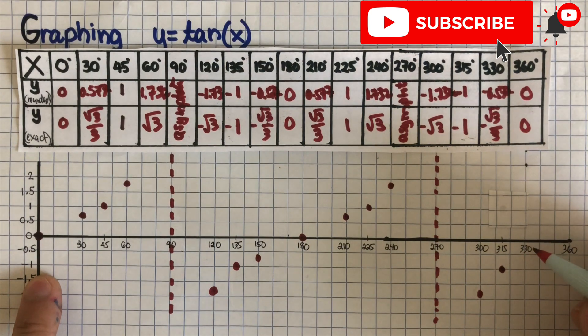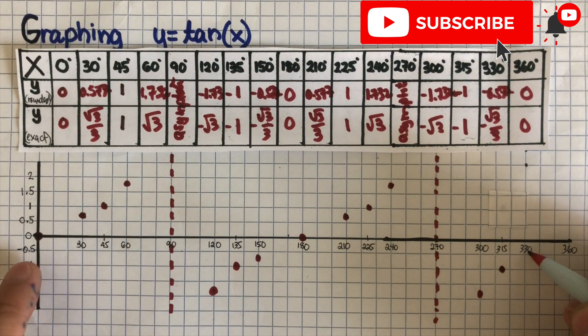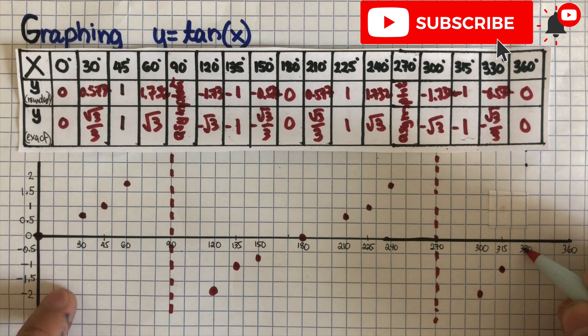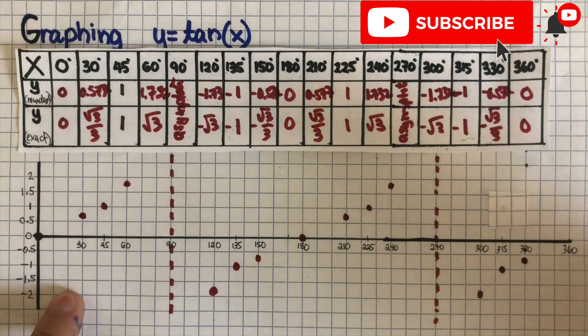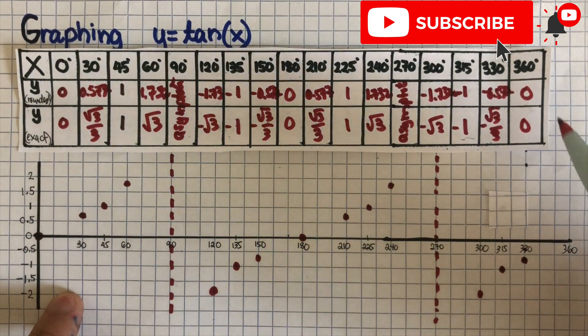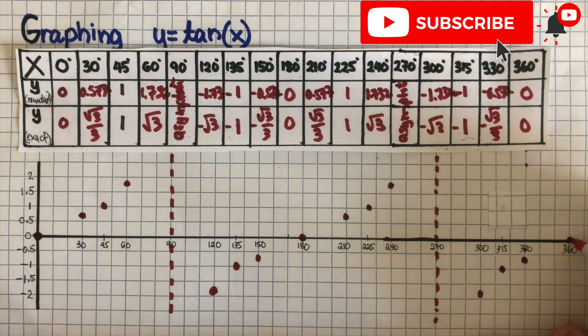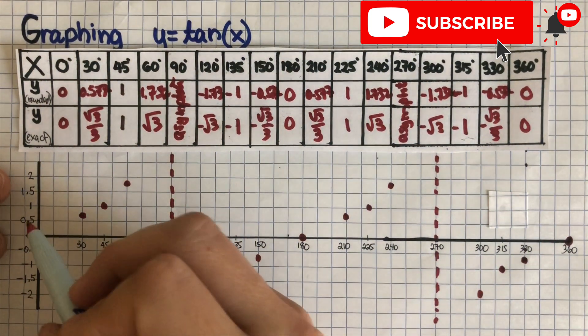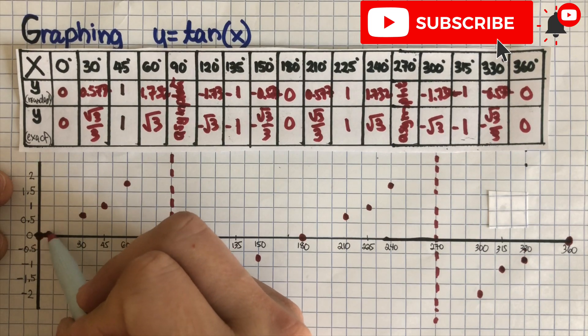And then 330 is negative 0.577, so that should be somewhere around here. And then 360 is zero, that should go here. And so we can sketch the graph, the parent graph.